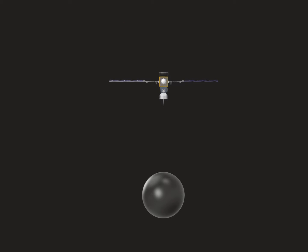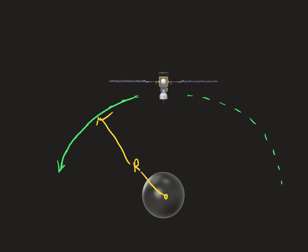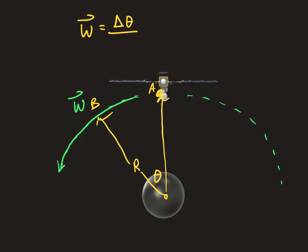For an example, we have a satellite in motion around our planet. As this satellite moves around this circle, we have a radius R from the satellite's orbit to the center of our planet. As this object moves about its orbit, it's moving with angular velocity — referring to how fast this object is changing its angular position, measured as change in radians over change in time, which is why our units are radians per second.